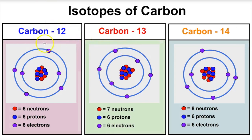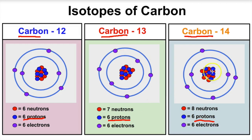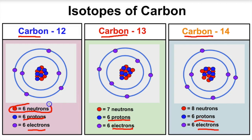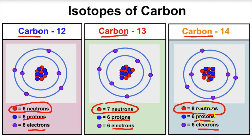Here are three different isotopes of carbon: carbon-12, carbon-13, and carbon-14. What makes every one of these carbon is the fact that every one of them has six protons inside its nucleus. You'll also notice that there are six electrons outside the nucleus of every single one of these isotopes. The only thing that's different in each one of these atoms is the number of neutrons — carbon-12 has six neutrons, carbon-13 has seven neutrons, and carbon-14 has eight neutrons in its nucleus.